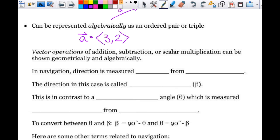So vector operations of addition, subtraction, or scalar multiplication can be shown geometrically and algebraically. So geometrically is where we're actually drawing them. And algebraically would be more like what we looked at today. But when you draw them, unless you're just multiplying by two and making it twice as long, you actually draw one and then draw the other one and put them together like we did in our notes on Friday.